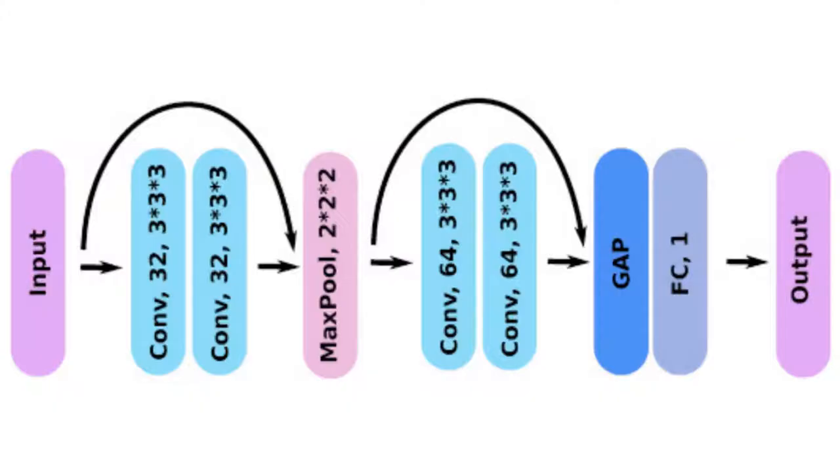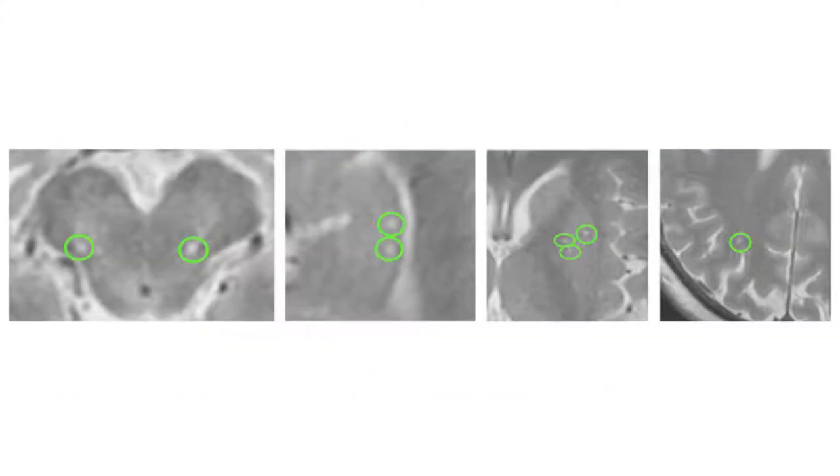In this work, we propose and evaluate an automated method to quantify PVS in the midbrain, the hippocampi, and the basal ganglia.